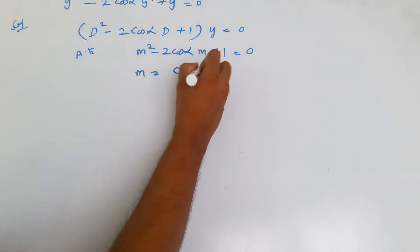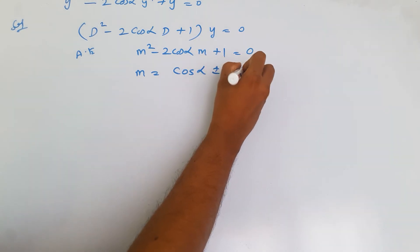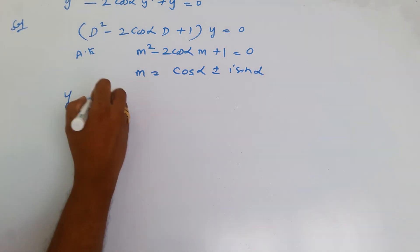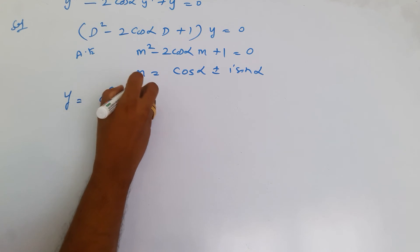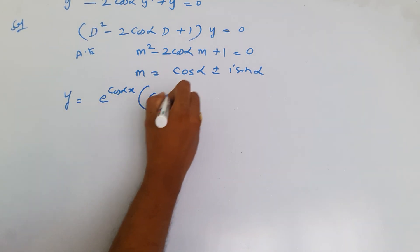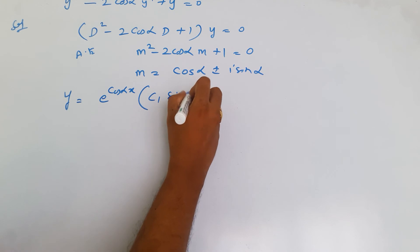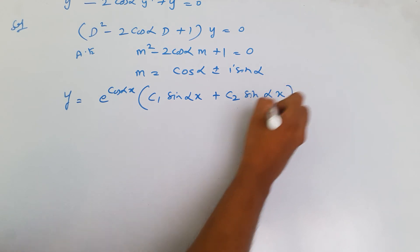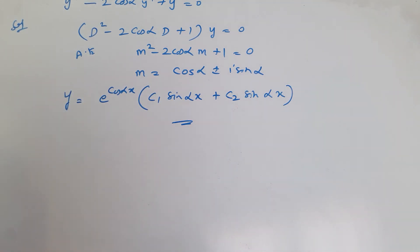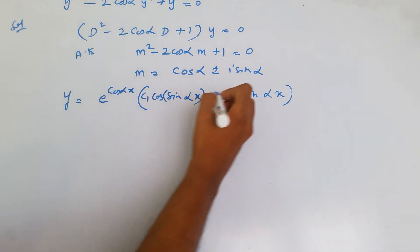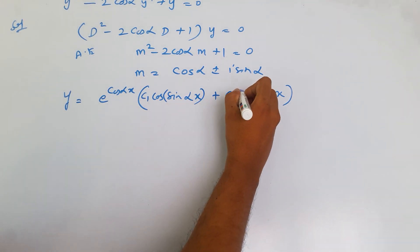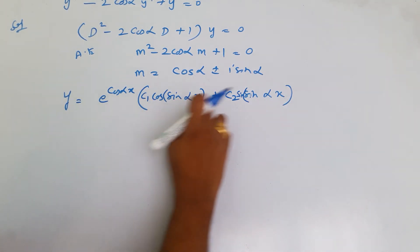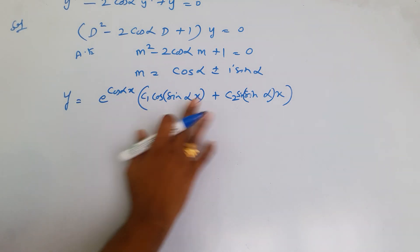The roots are cos(α) ± i·sin(α). So y = e^(cos(α)·x) · [c₁·cos(sin(α)·x) + c₂·sin(sin(α)·x)]. This is the solution of the differential equation.